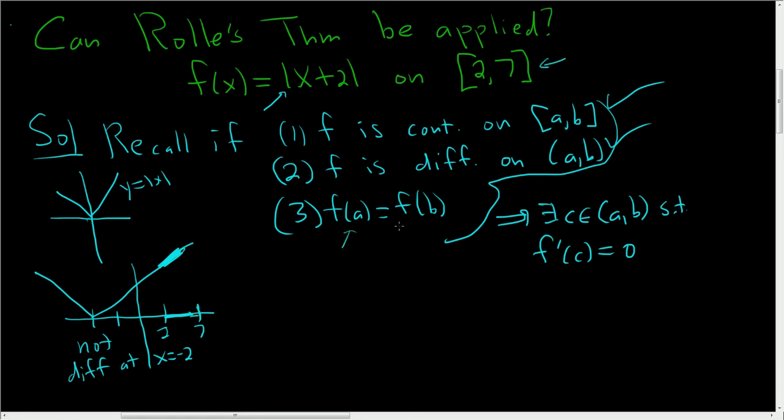Now we'll check condition 3. In our problem, a = 2 and b = 7. So f(2) = |2+2| = |4| = 4,